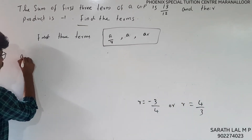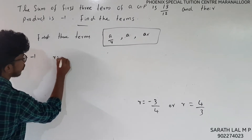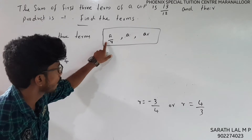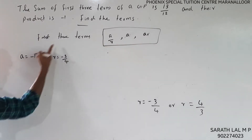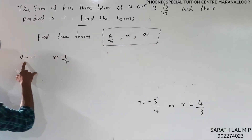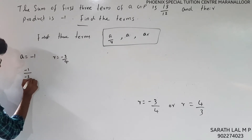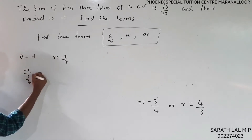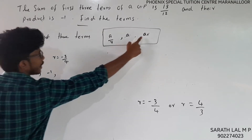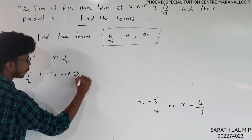So a is equal to minus 1 and r is equal to minus 3 by 4. The first three terms are a/r, a, ar. So a/r is minus 1 divided by minus 3 by 4, which gives 4 by 3. Then a is minus 1, and ar is minus 1 times minus 3 by 4 equals 3 by 4.